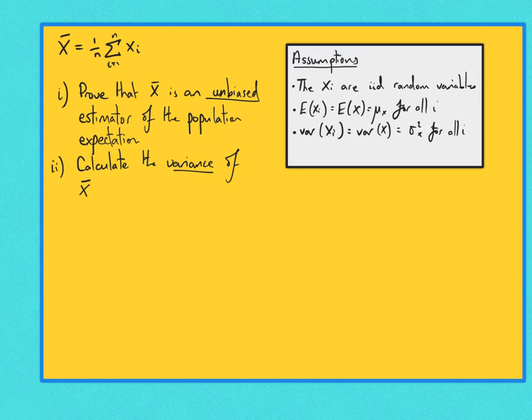We know from the lectures that the sample mean is an estimator for the population expectation. We're going to do two things in this video. The first thing is we're going to show that the sample mean, or x-bar, is an unbiased estimator of the population expectation. We're then going to calculate the variance of the sample mean. So let's start with proving that x-bar is an unbiased estimator of the population expectation.